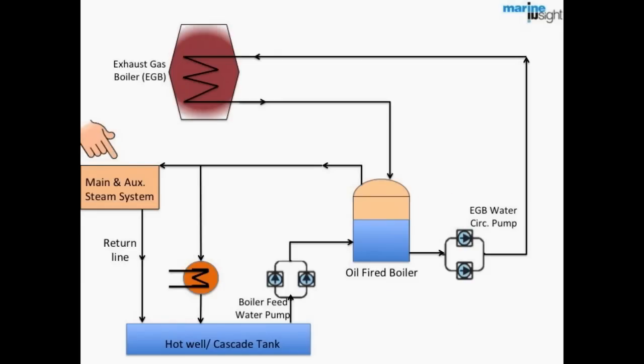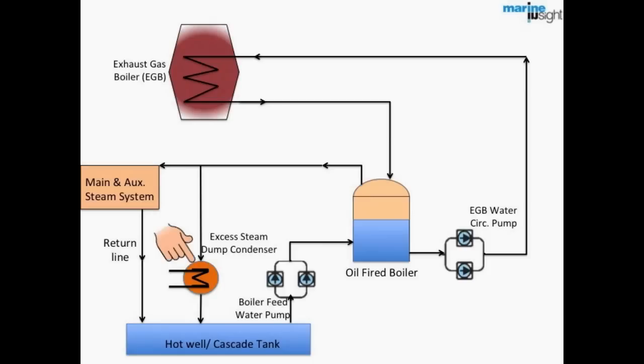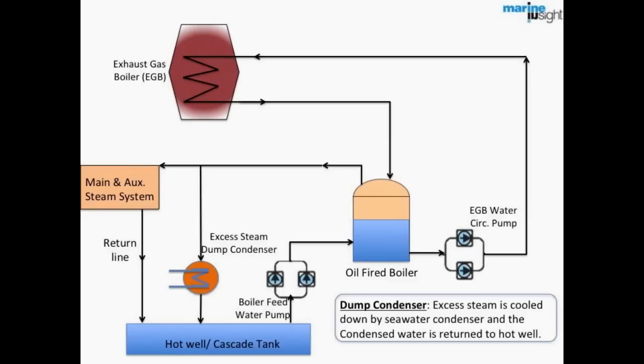Main and auxiliary steam supply. The steam generated is provided to various systems in the engine room for consumption. Steam dump condenser. The excess steam is cooled down by seawater condenser and the condensed water is then returned to the hot well.